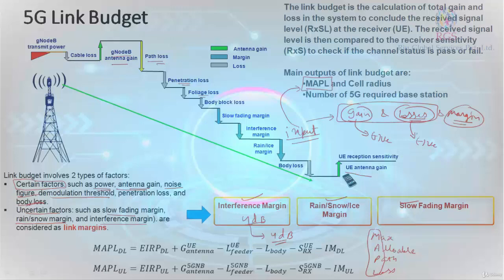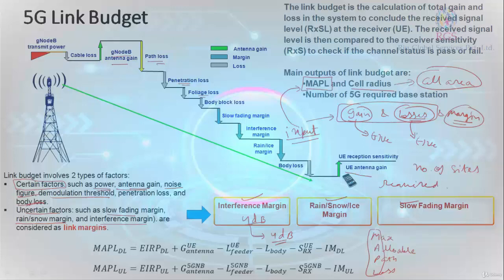With the Maximum Allowable Path Loss, you calculate the cell radius. With the cell radius you calculate the cell area. And with the cell area you calculate the number of sites required to cover the target area.